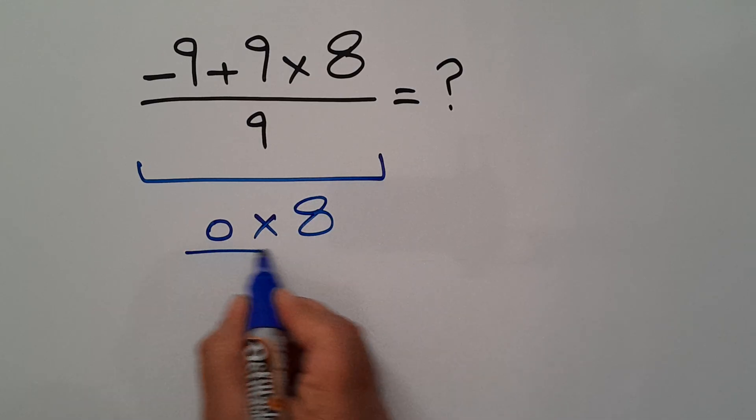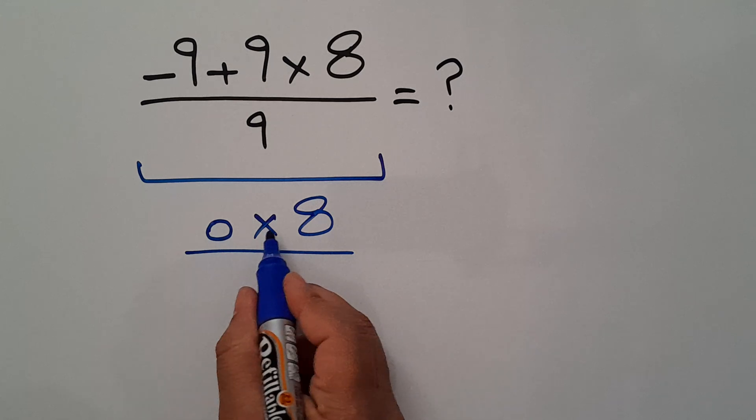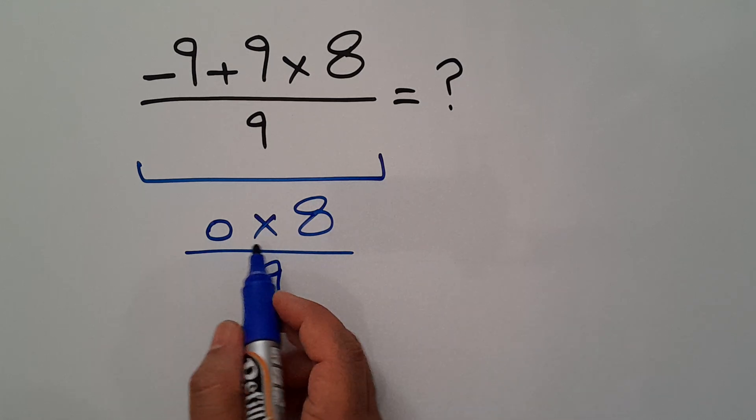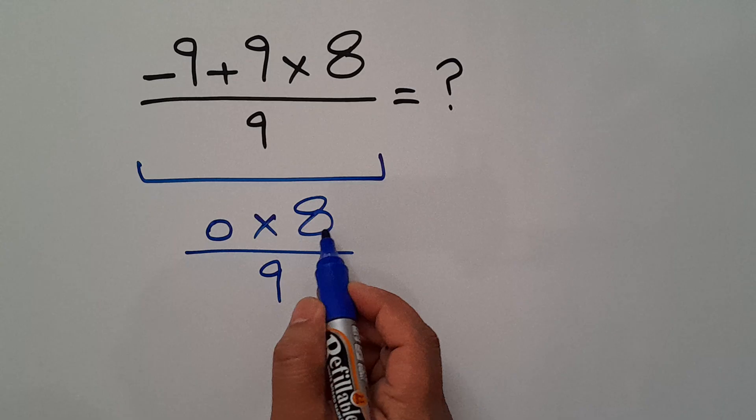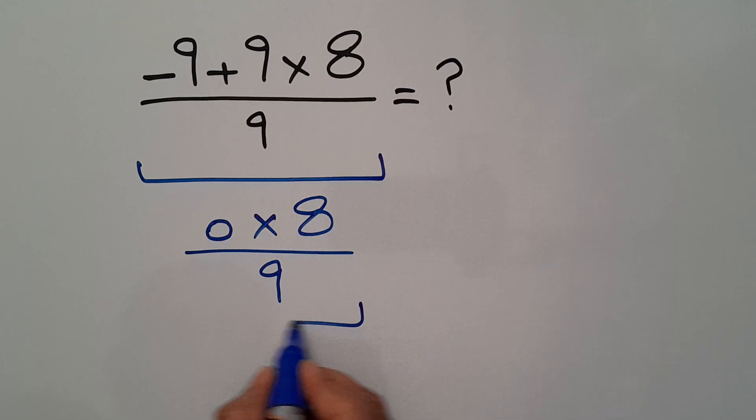...divided by 9. 0 times any number equals 0, and here 0 times 8 equals 0, so 0 divided by 9...